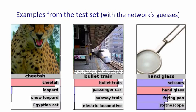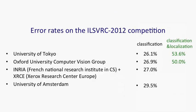Here are the error rates for the computer vision systems. One thing you'll notice is that the best systems are all very similar. The University of Tokyo managed to get 26.1%, Oxford University — generally recognised as possibly the best group in Europe — also got in the 26% range, and the French National Research Labs and the Xerox Park Centre got 27%. So you would have guessed it was going to be hard to beat 26%.